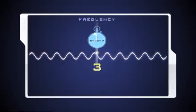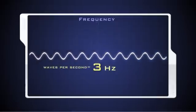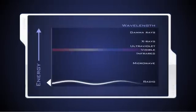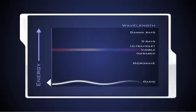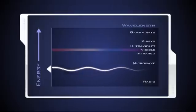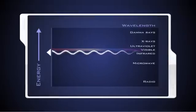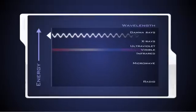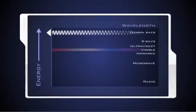The number of these crests that pass a given point within one second is described as the frequency of the wave. One wave, or cycle, per second is called a hertz. Long EM waves, such as radio waves, have the lowest frequency and carry less energy. Adding energy increases the frequency of the wave and makes the wavelength shorter. Gamma rays are the shortest, highest energy waves in the spectrum.